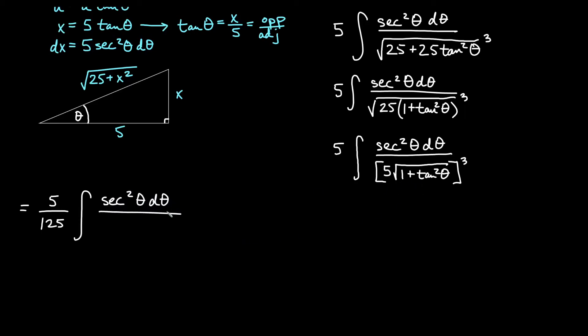And on the bottom, I get the square root of secant squared theta all cubed. So it shouldn't be too bad to reduce this. We get 1 over 25 in the front. We'll keep our secant squared theta d theta that we've had since the very beginning.